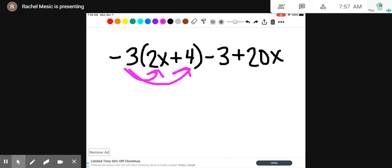Negative 3 times 2x is negative 6x. Negative 3 times positive 4 is negative 12. And copy everything else.